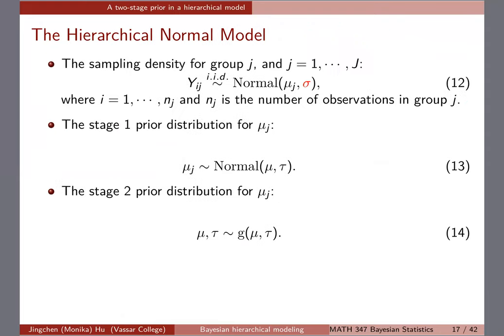That's what we call the stage-one prior for mu_j, equation 13. For mu and tau themselves, you can give fixed numbers, or you can keep giving distributions for them. I'm generically writing equation 14 as G(mu, tau) for now. Later we'll see how to put particular hyperpriors for them. If you want to stop and give specific numbers, that works too, but you lose the flexibility to model them.